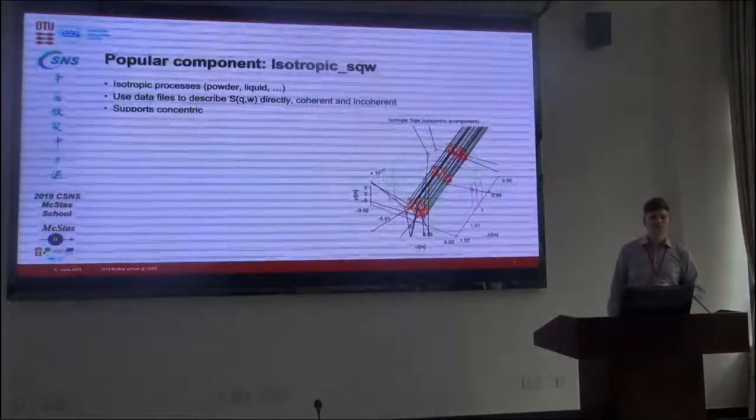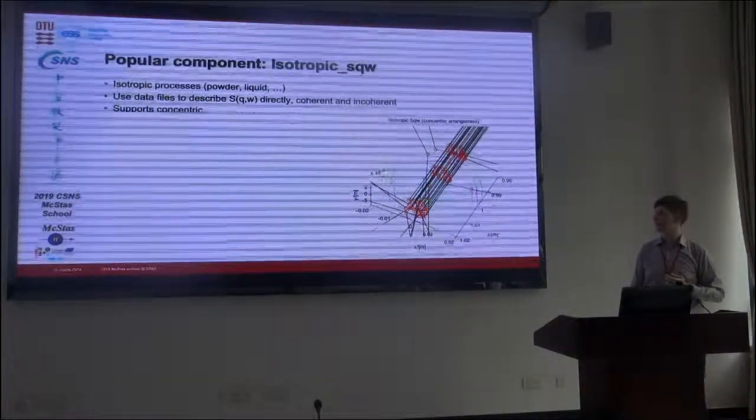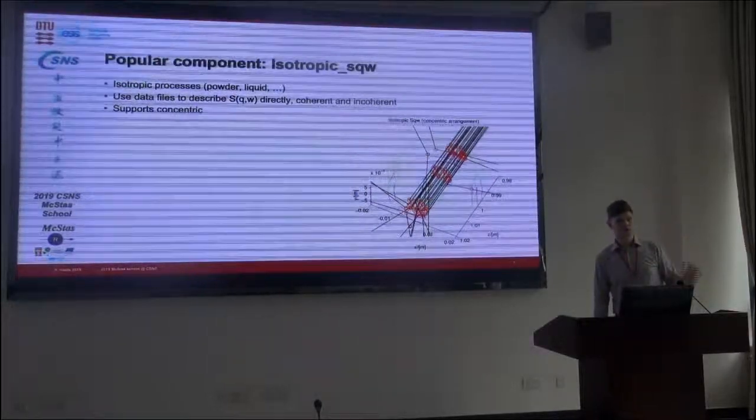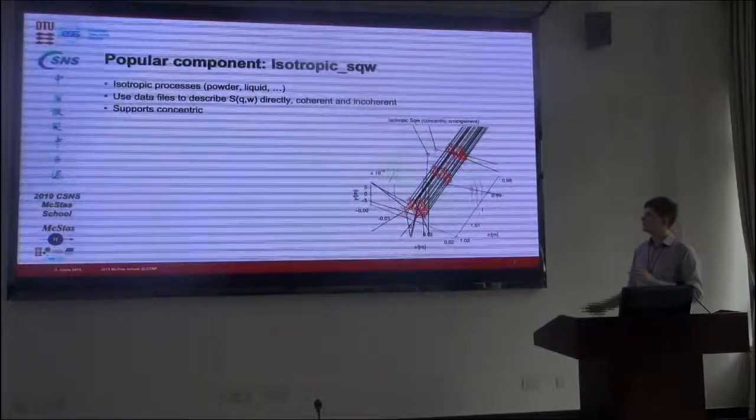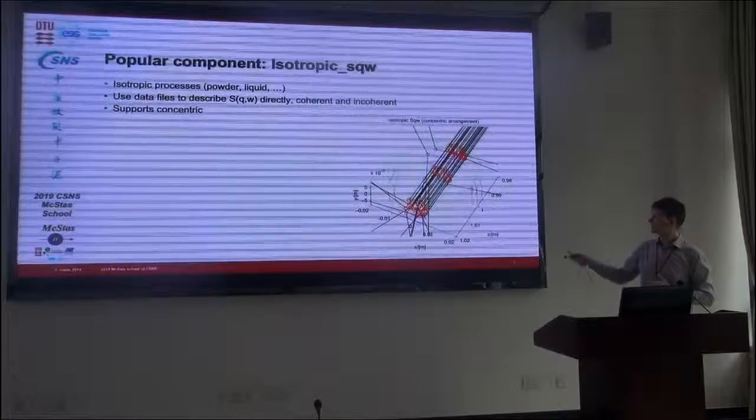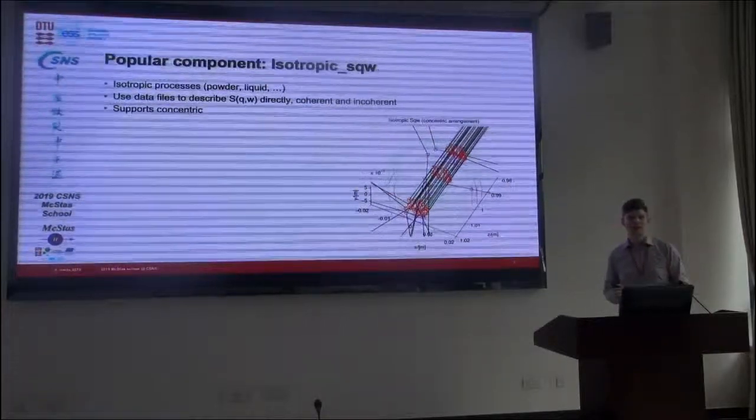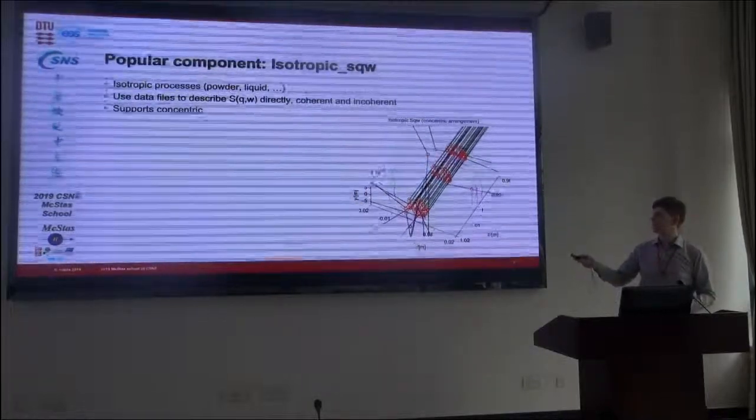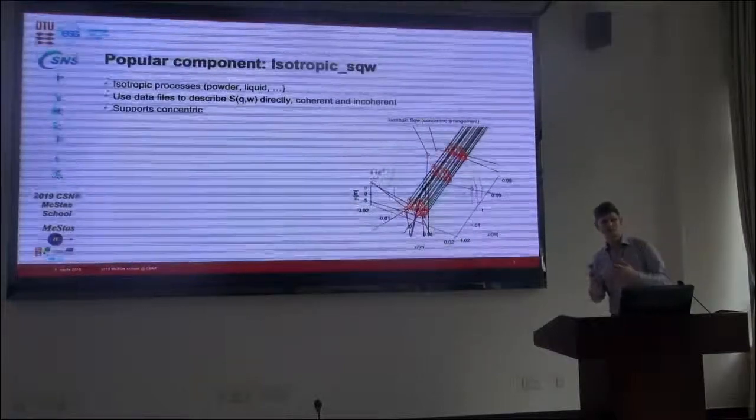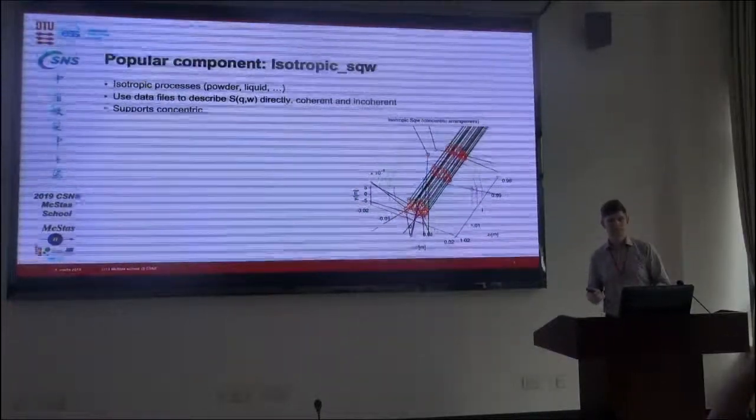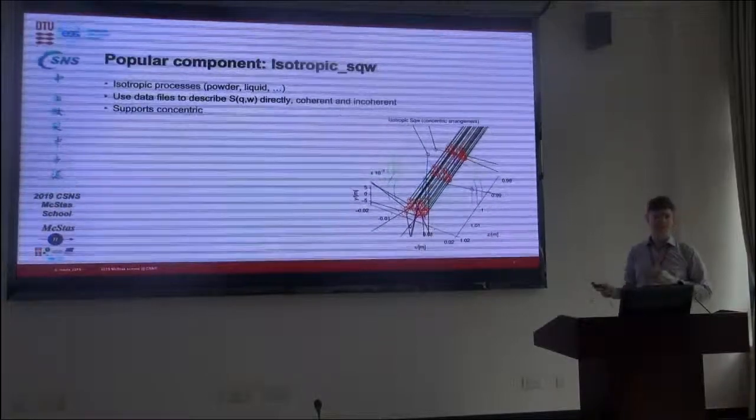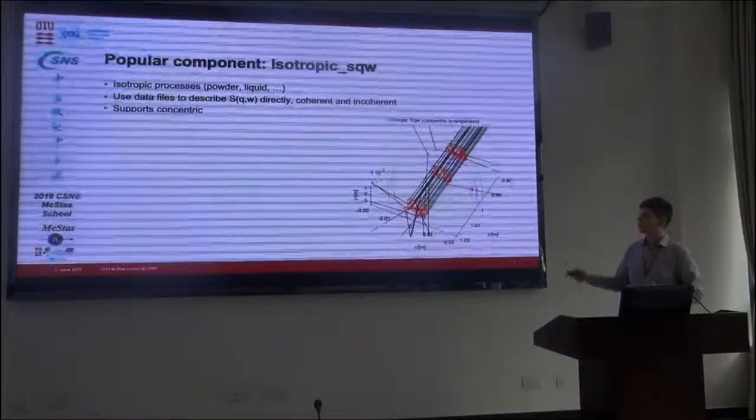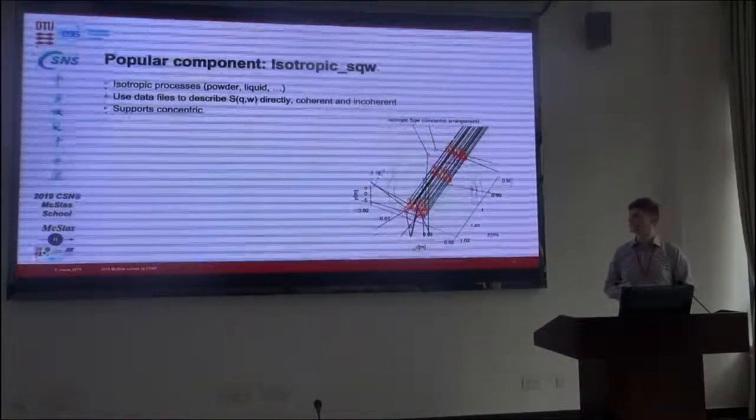Now, the next component I wish to discuss is called isotropic_sqw. And it's a very general component that does multiple scattering, and it can do the concentric case you see here, where it has some sample environment around the crystal, and it takes a data file. It takes the S(Q,ω) data file directly, in some format, binned in some way, but the Q is not a vector, it's a scalar. So it's, hence, isotropic. So this is useful for powders and liquids and things like that.